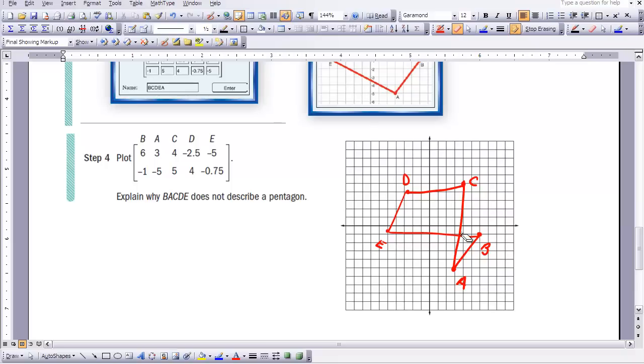So this does not describe a Pentagon. So when we organize our information in a matrix, in a point matrix, we want to make sure that we enter or we put them in a sequential order as we would walk around our polygon.